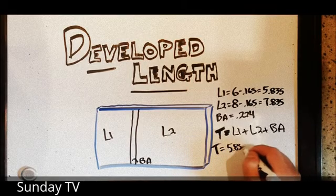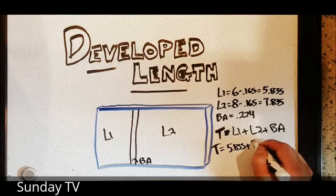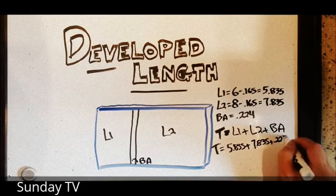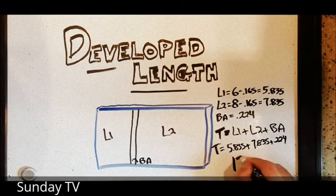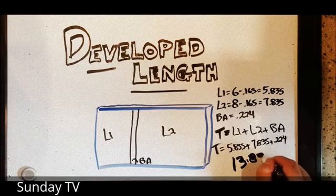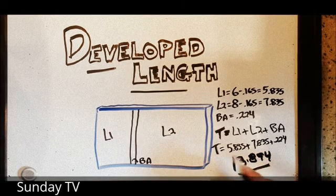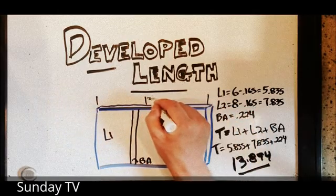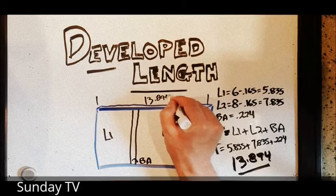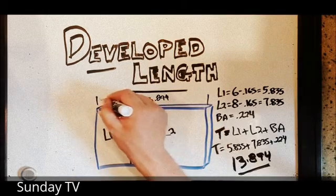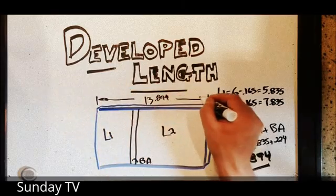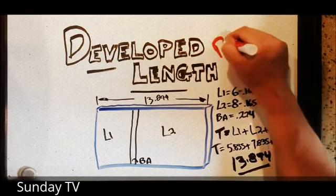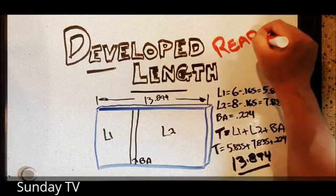So in this case, it's 5.835 plus 7.835 plus 0.224. So that's the total length of 13.894. We saved some material. Didn't have to use the whole 14 inches. And with that length, when we cut it exactly to 13.894, when we put it in the bending brake and bend it, we'll end up with exactly a leg six inches long and a leg that's eight inches long.